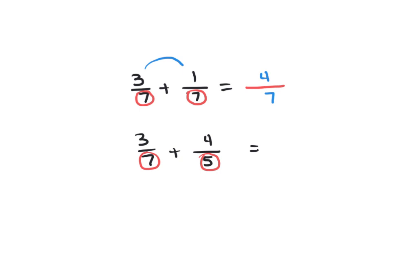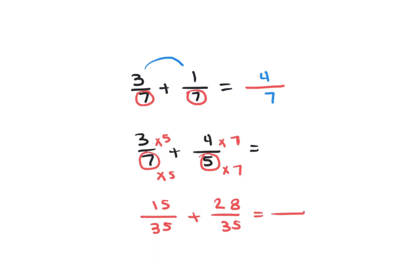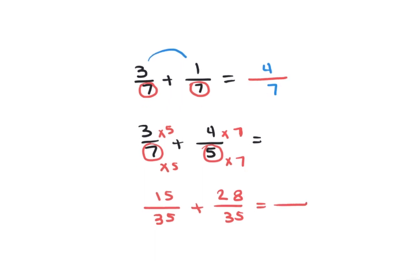To get the same denominator, multiply 7 by 5 and multiply 3 by 5 as well. Then multiply 5 by 7 and 4 by 7. Now you have 3 times 5 equals 15, so 15 over 35, plus 28 over 35. We add 28 plus 15, which equals 43, giving us 43 over 35.